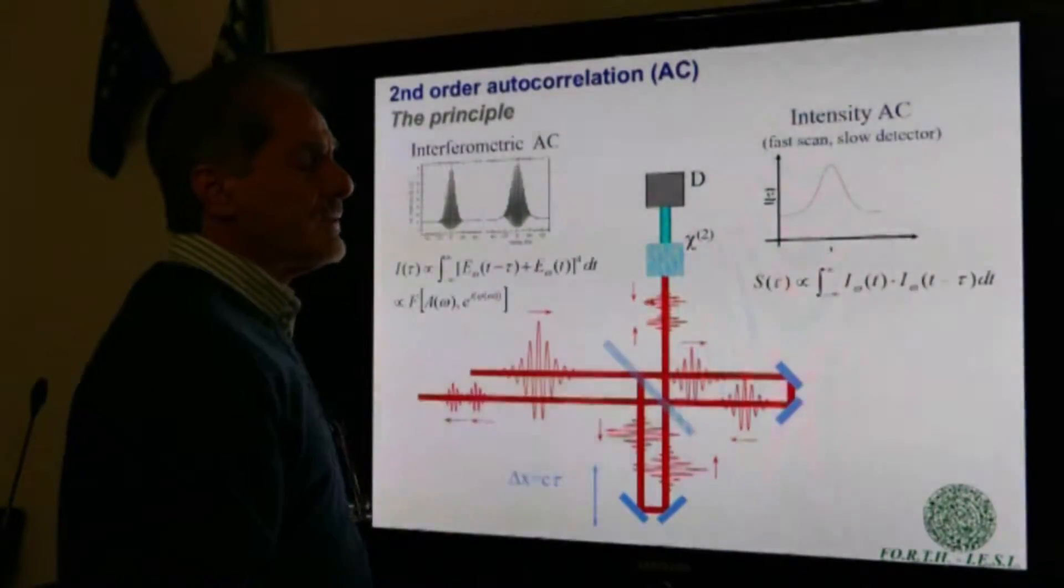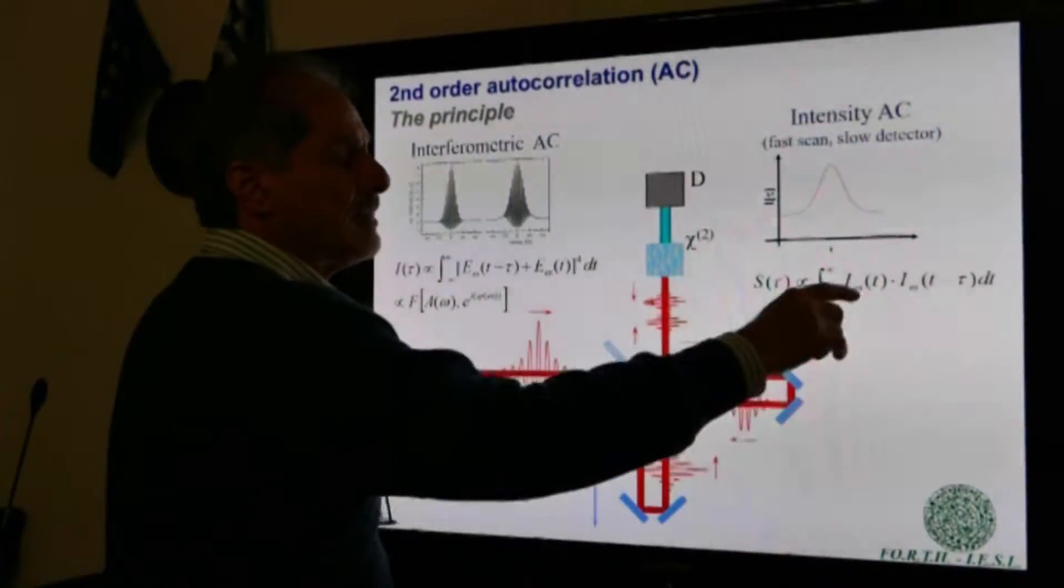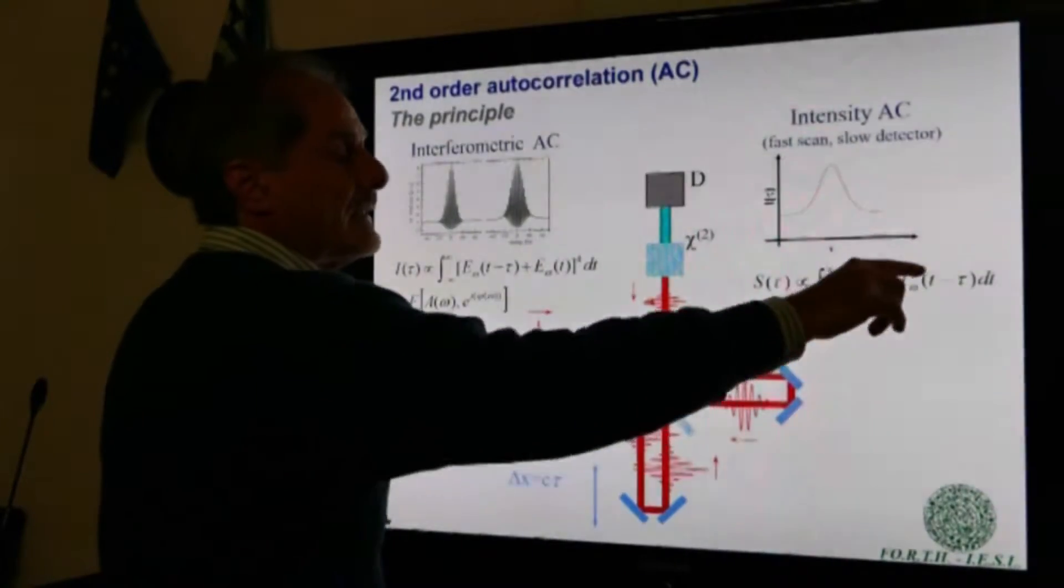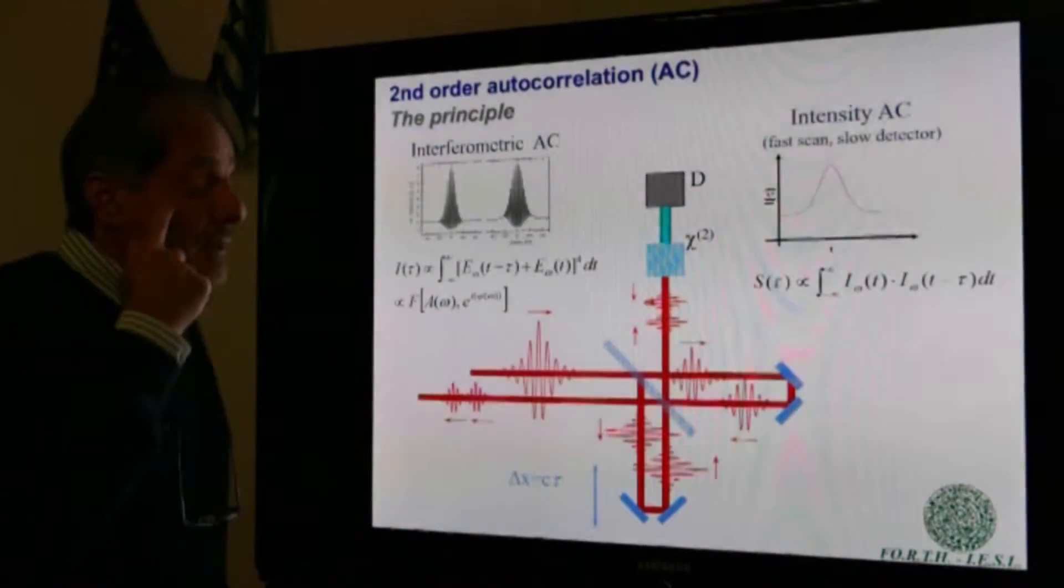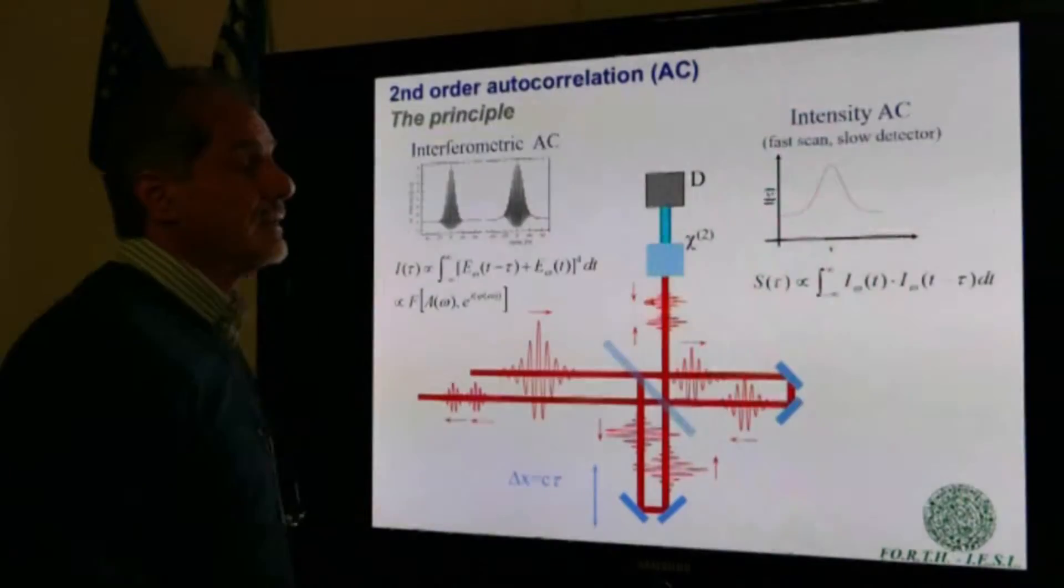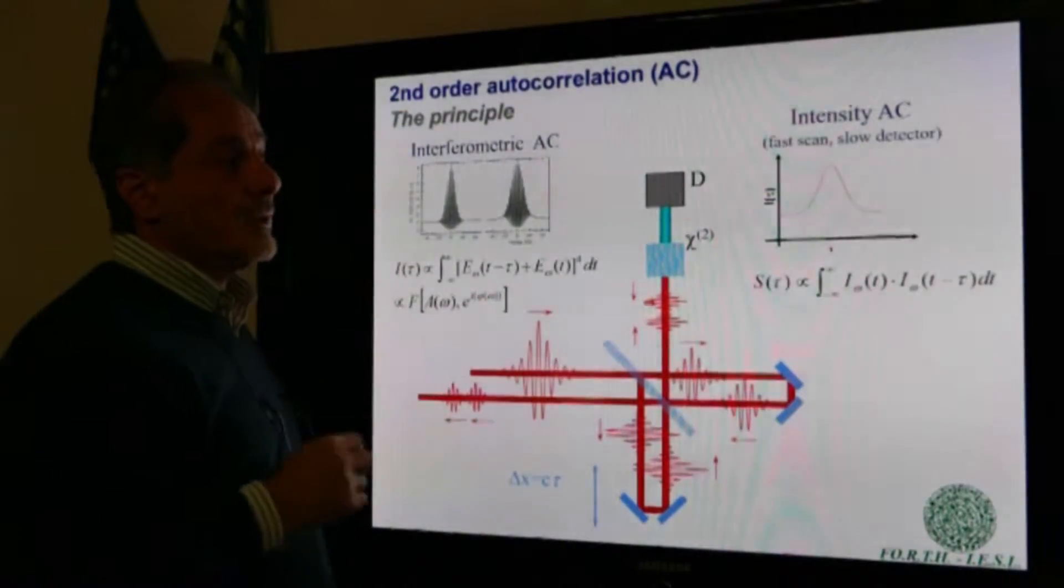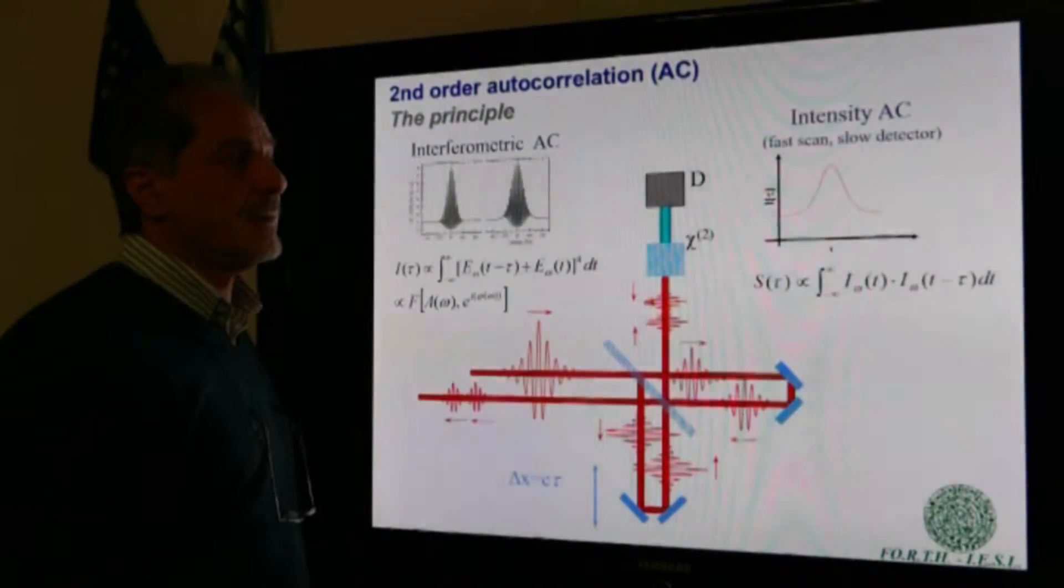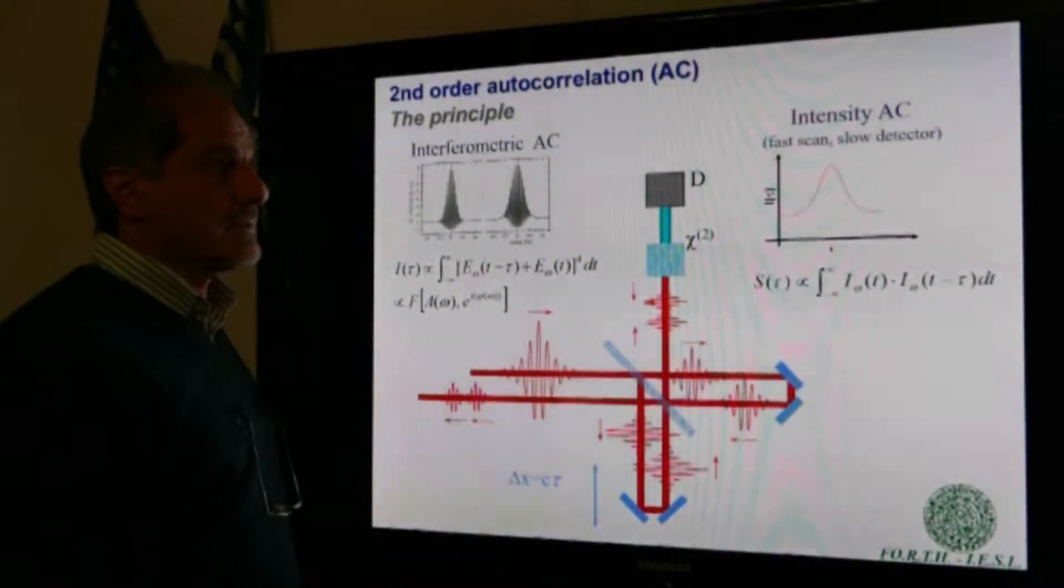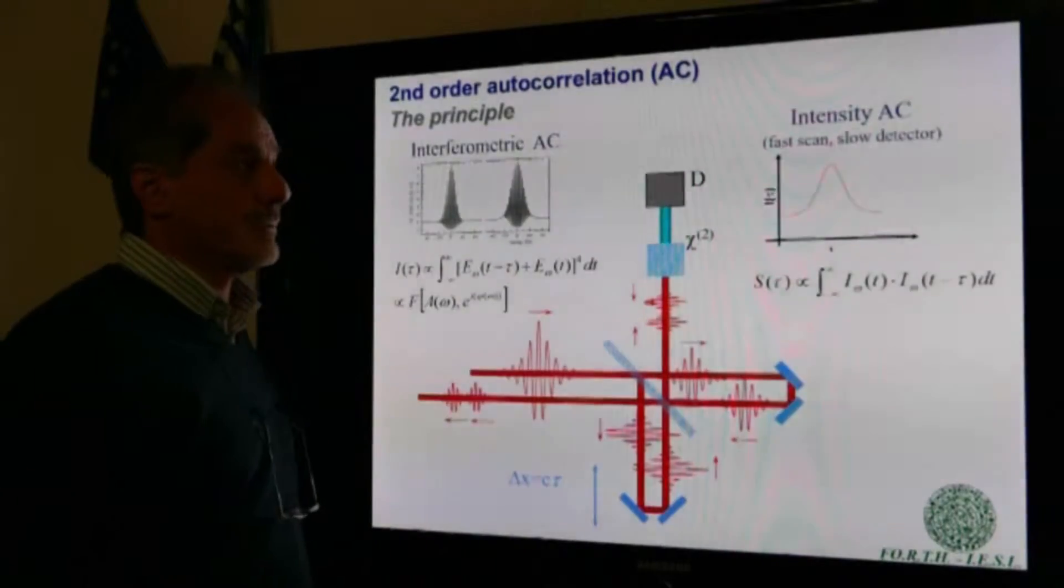is the cycle average of these traces that looks like that. The signal now is proportional to the integral of the product of the intensities of the two pulses. The width of this trace here gives a good estimate for the duration